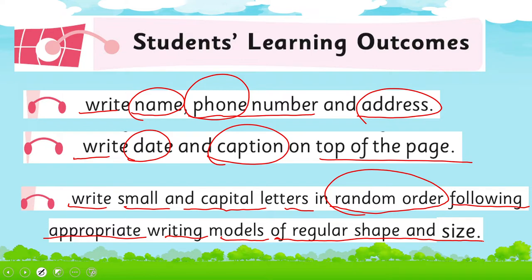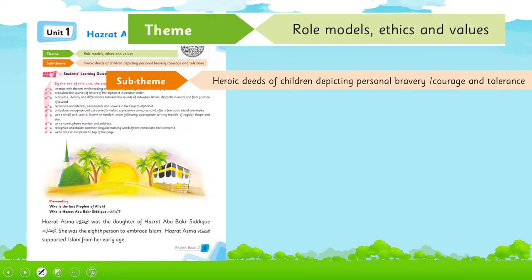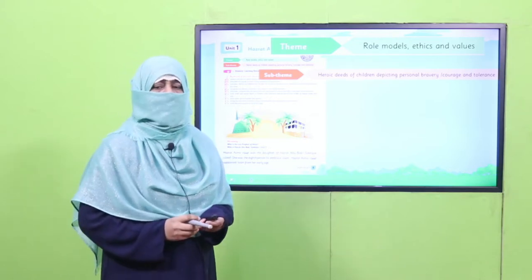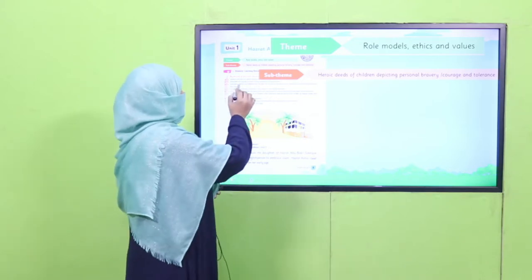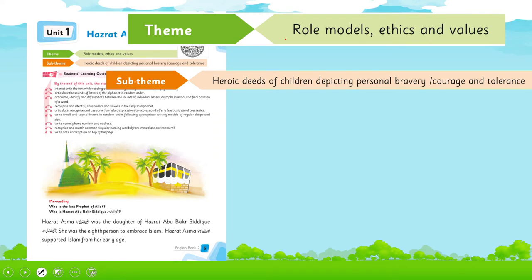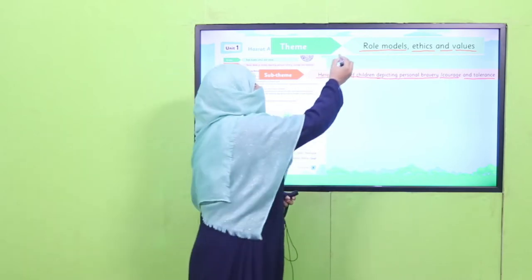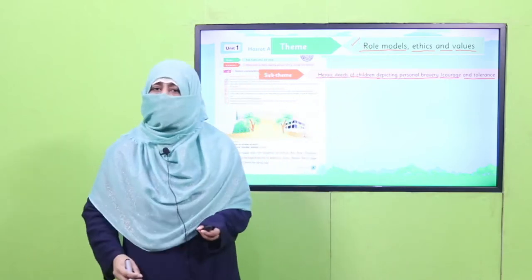That's it about the lecture division. Now it's time to understand what this story is about. The theme of this story is role models, ethics and values, and its sub-theme is heroic deeds — fortune of children depicting personal bravery, courage and tolerance. My dear students, what does 'role model' mean?